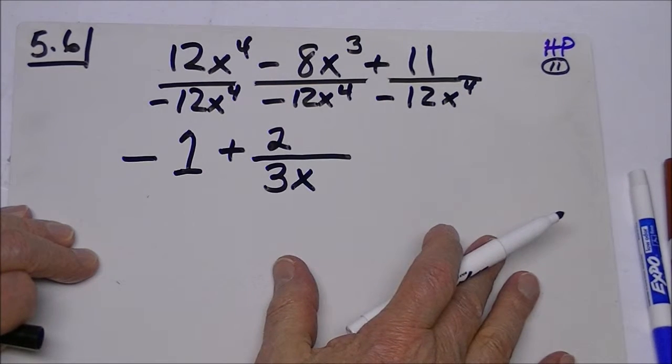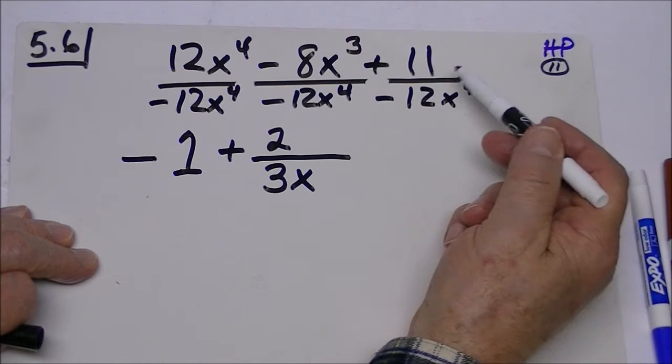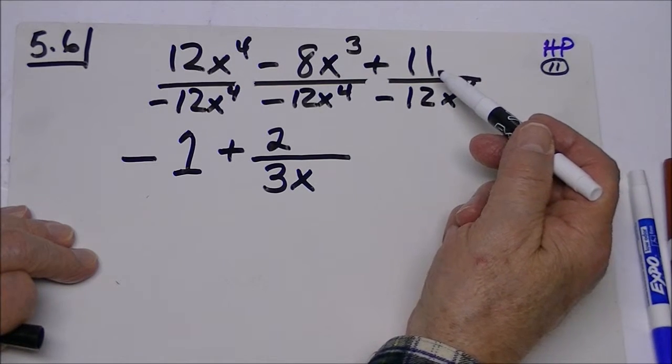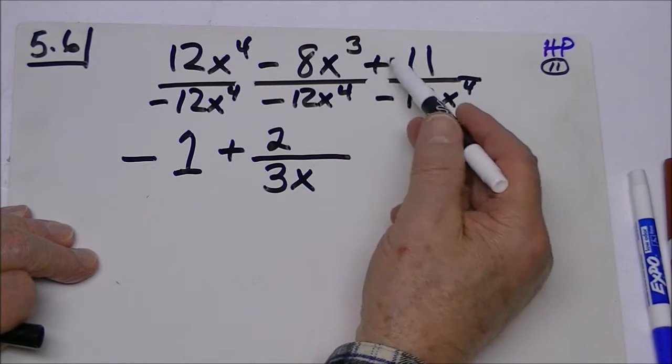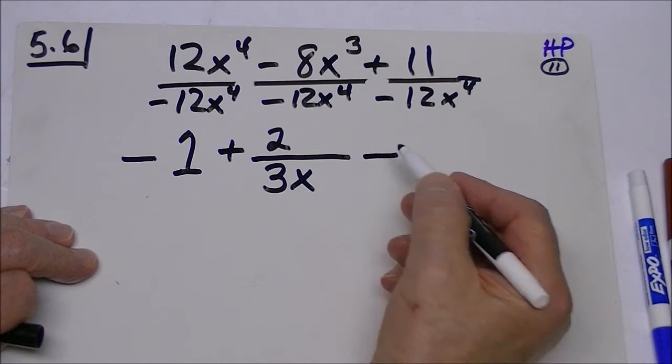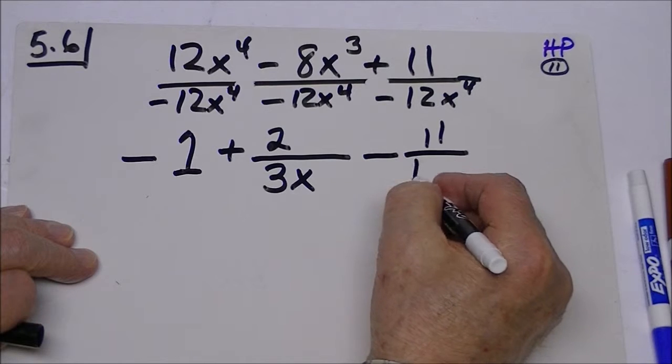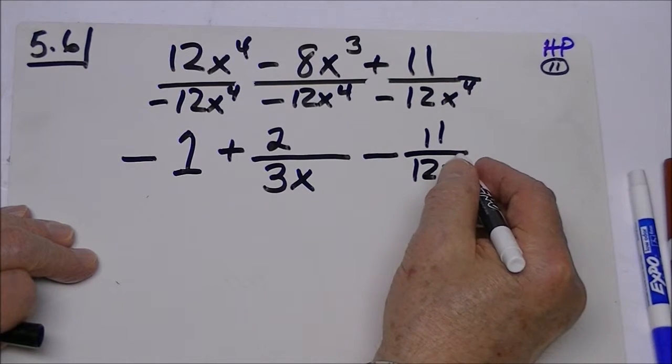Now for some of you this might be unusual, but that's perfectly correct. For this last one, notice nothing cancels out, so we need to note the sign. We have a positive and a negative, so this will end up being negative eleven over twelve X to the fourth.